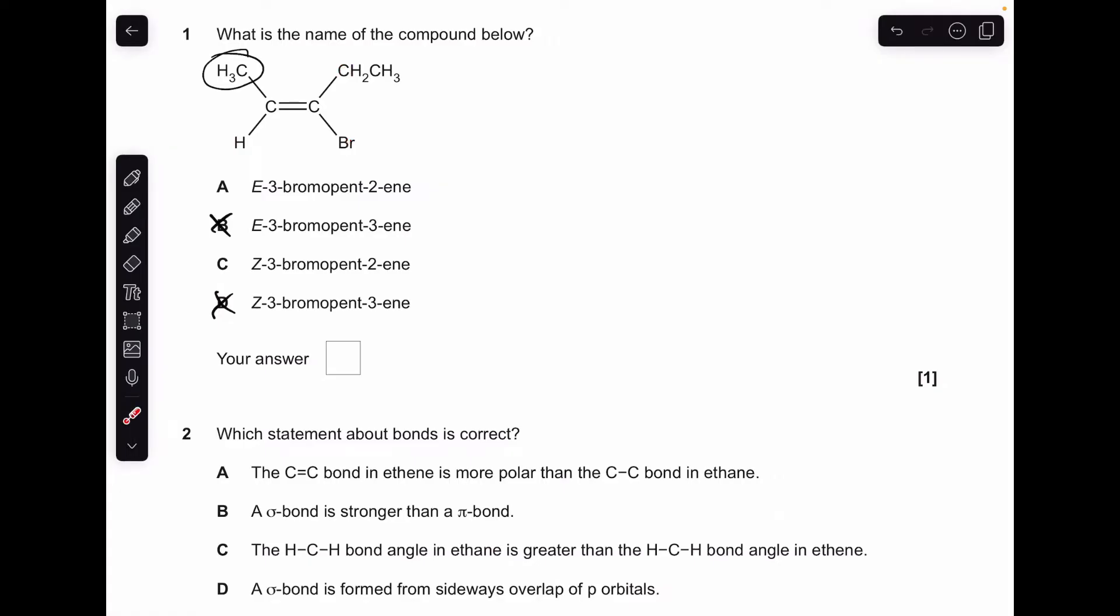Then we've got carbon versus bromine. Bromine's got a much higher atomic number, so that's got priority on the right-hand carbon. The priority groups are on opposite sides of the double bond, so it's the E isomer. So A is the answer.